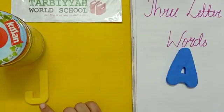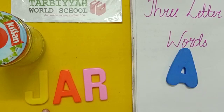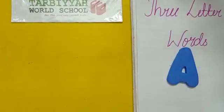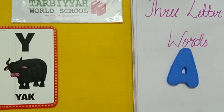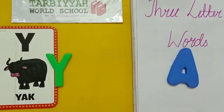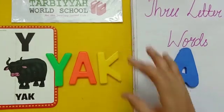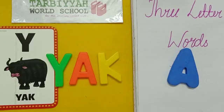J — all of you repeat with me. J, A, R — jar. J-A-R, jar. And K — the sound of K is K. Yak. Y-A-K, yak. You have to repeat with me: Y-A-K, yak.